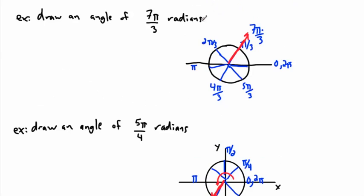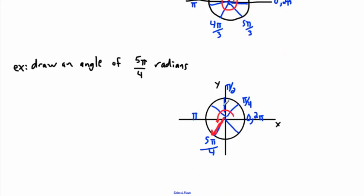The previous example went all the way around and finished here; this one just goes around to five pi over four. To label everything: continuing from five, this is six pi over four, and this must be seven pi over four. You could also label three pi over four, and so on around the circle.